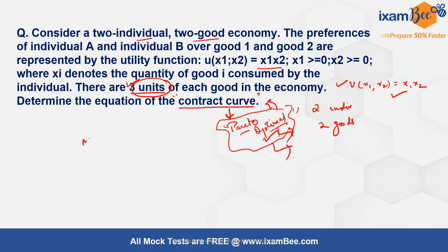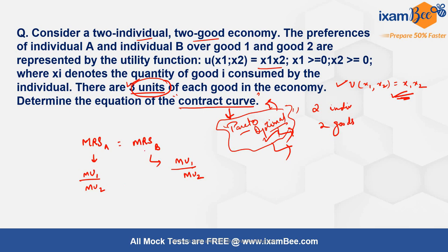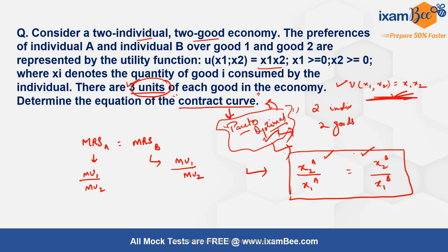For Pareto optimality, the marginal rate of substitution (MRS) for individual A must equal the MRS for individual B. The MRS is MU1 divided by MU2. Given the utility function U = x1·x2, the MRS for individual A is x2a / x1a, and for individual B it is x2b / x1b.